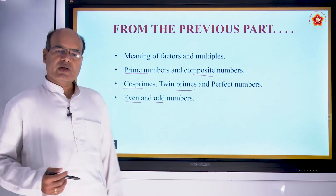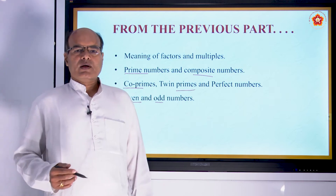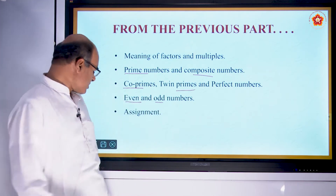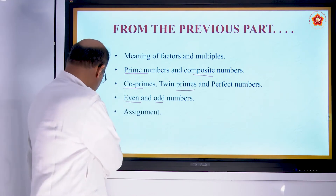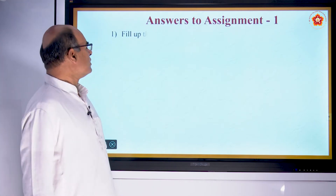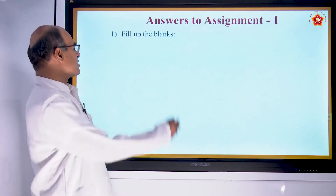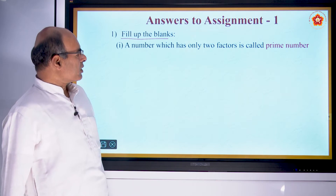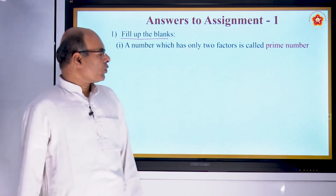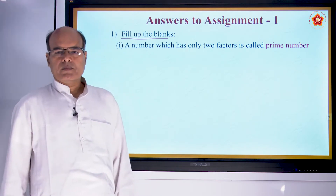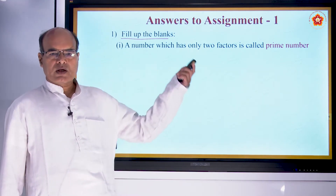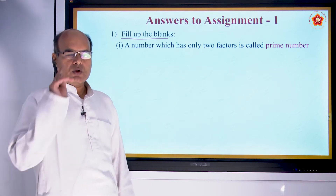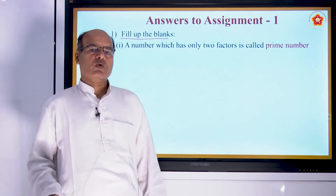At the end of the last video, a few questions were given for the assignment. Let us discuss the answers. The first question was fill up the blanks: a number which has only two factors is called a prime number. Prime numbers have two and only two factors.